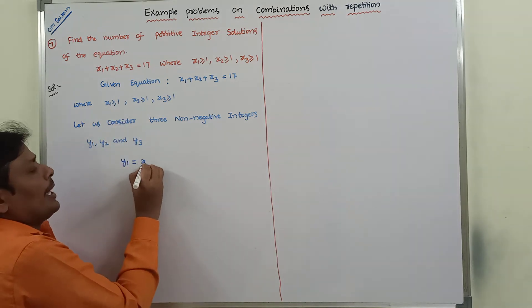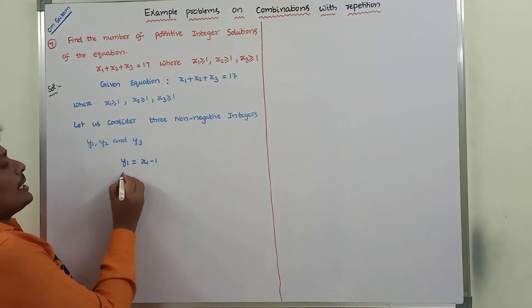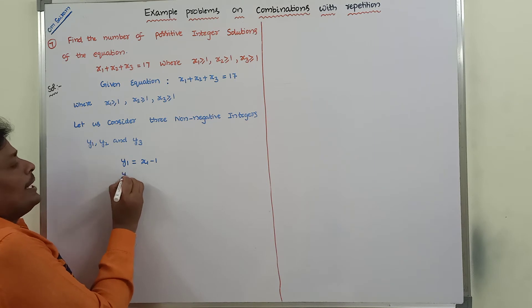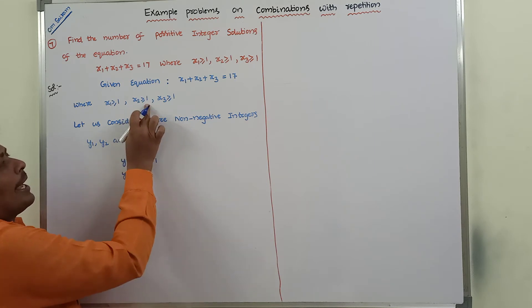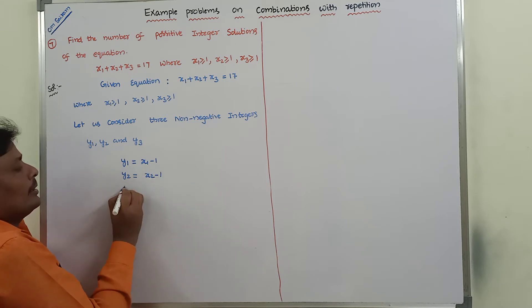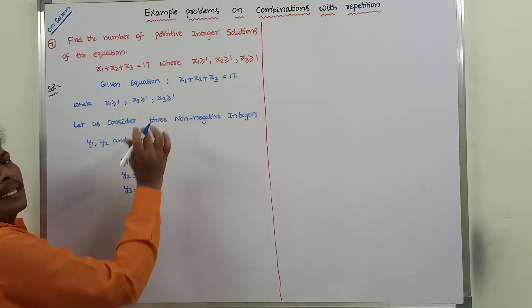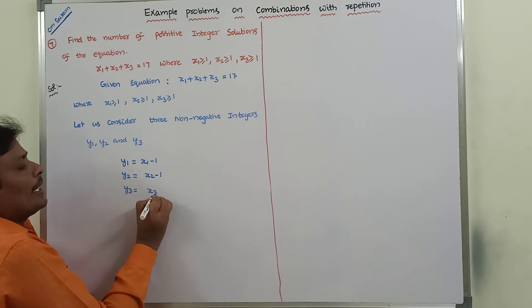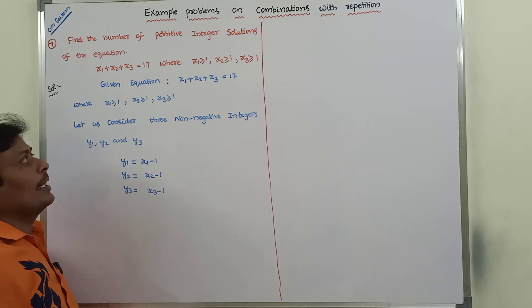So x1 minus 1. Next, y2 is considered as x2 minus 1. And y3 can be considered as x3 minus 1.